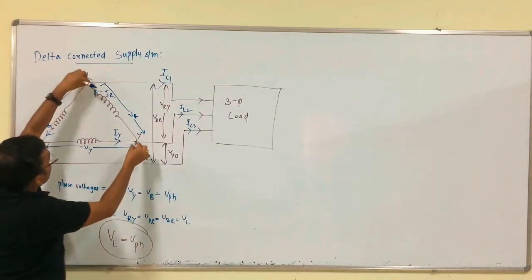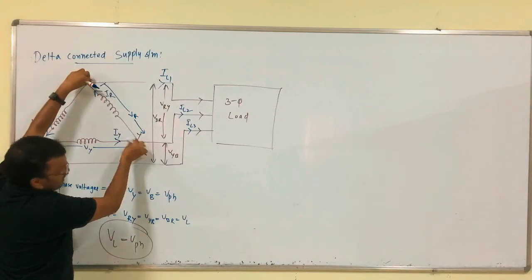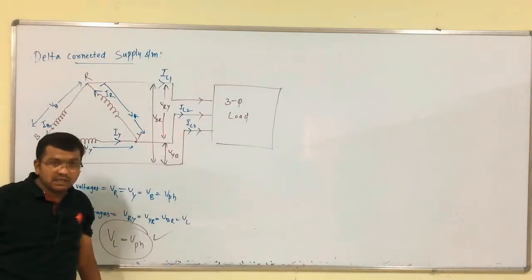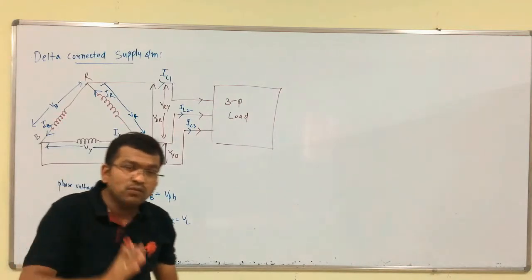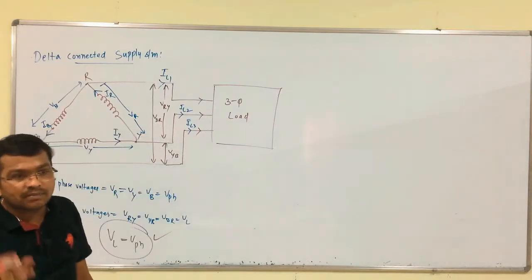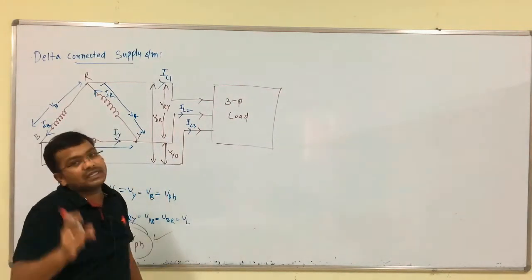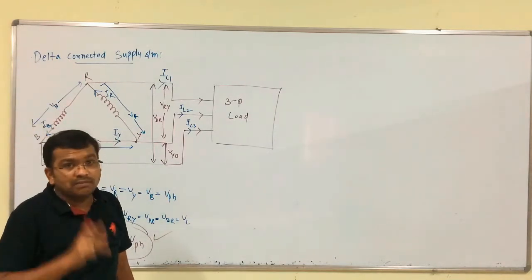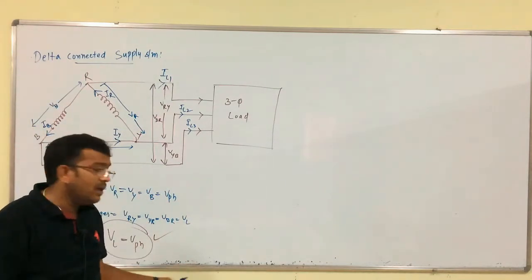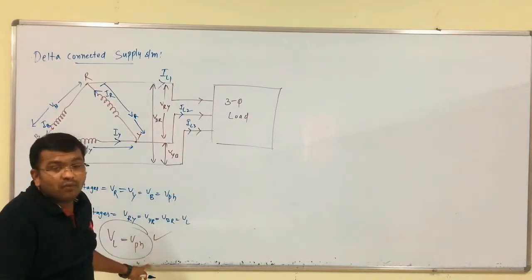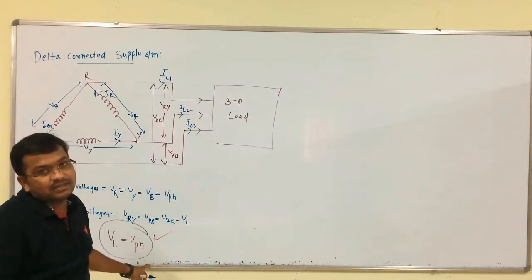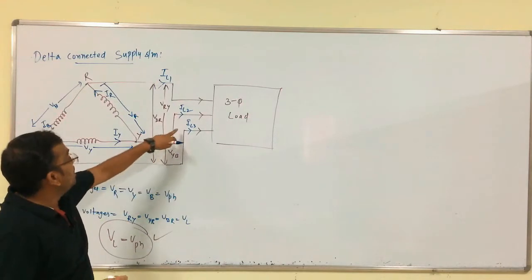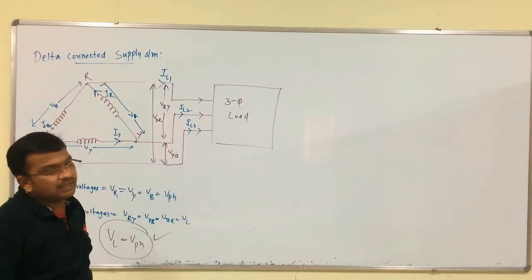So in the delta-connected supply system, line voltage equals phase voltage. In contrast, in the star-connected supply system, line current equals phase current but there is a difference in voltages. In the delta system, voltages are equal but there is a difference between line currents and phase currents.